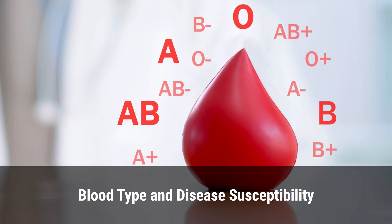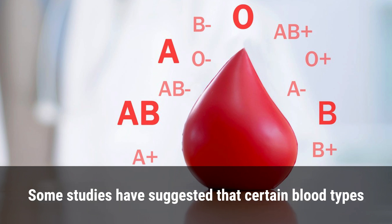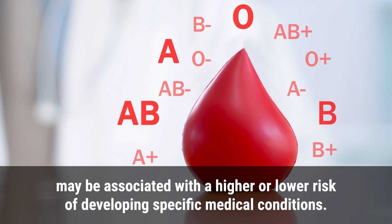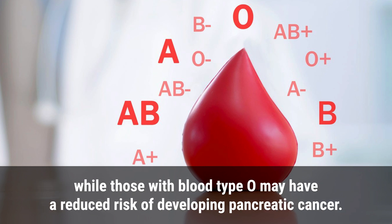Research has also explored potential links between blood type and disease susceptibility. Some studies have suggested that certain blood types may be associated with a higher or lower risk of developing specific medical conditions. For example, individuals with blood type A may have a slightly increased risk of developing heart disease.